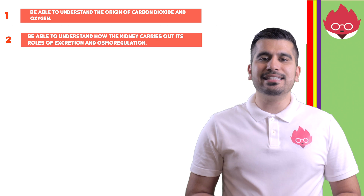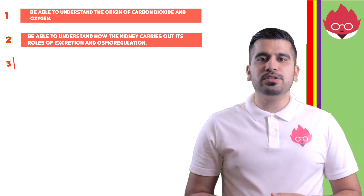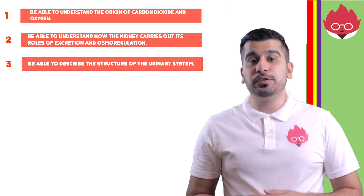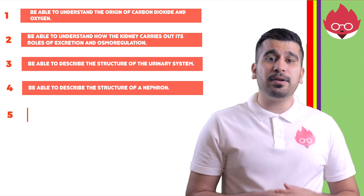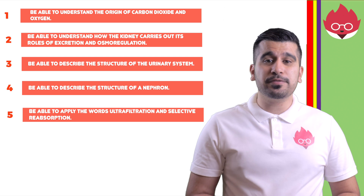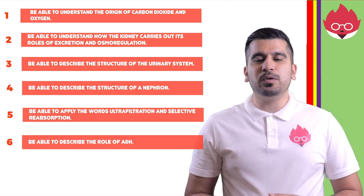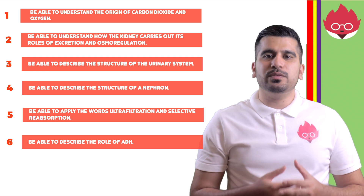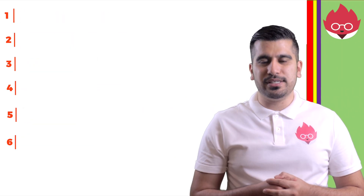By the end of this lesson, you should be able to understand the origin of carbon dioxide and oxygen, understand how the kidneys carry out their roles in excretion and osmoregulation, describe the structure of the urinary system, describe the structure of the nephron, apply the words ultrafiltration and selective reabsorption, and describe the role of ADH. In our next lesson, we'll look at the structure of the nervous and the hormonal system.